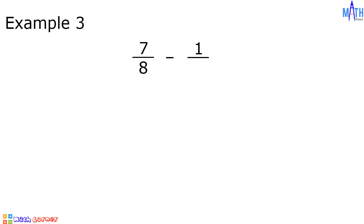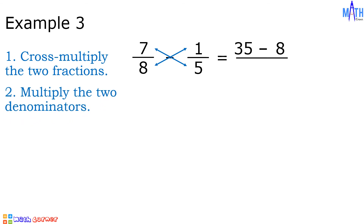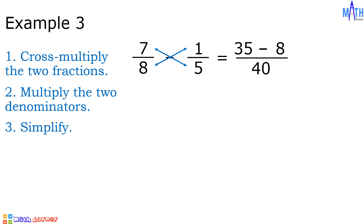Example number 3: 7 over 8 minus 1 over 5. Step number 1, cross multiply the two fractions. 7 times 5 is equal to 35, minus 1 times 8 is equal to 8. Step number 2, multiply the two denominators. 8 times 5 is equal to 40. Step number 3, simplify. 35 minus 8 is equal to 27, and copy the denominator. 27 over 40 is already expressed in lowest term. Therefore, 7 over 8 minus 1 over 5 is equal to 27 over 40.